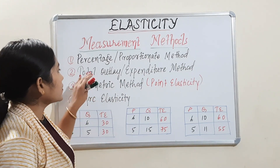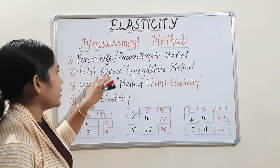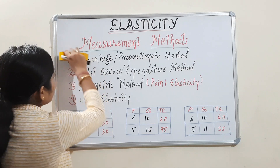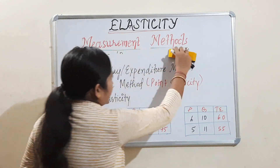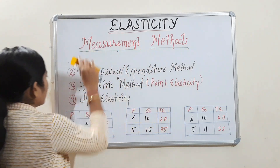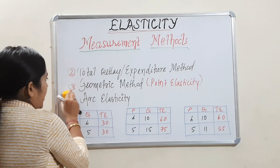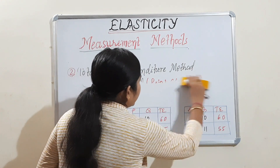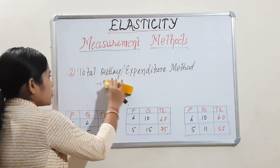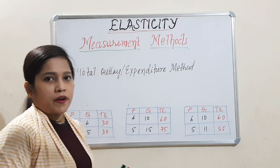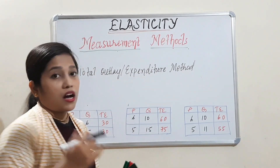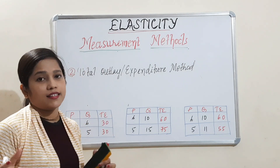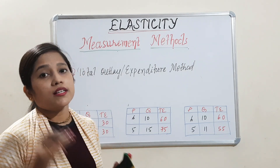Today we will deal with only one method, that is the total outlay and expenditure method. Let's rub the ones we've already covered. Geometric and arc elasticity we will cover in the next lecture. Coming to the total outlay and expenditure method, before moving to how we will measure the elasticity, let's first know how we will calculate total expenditure.